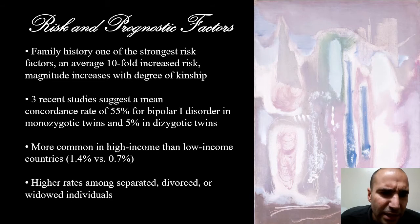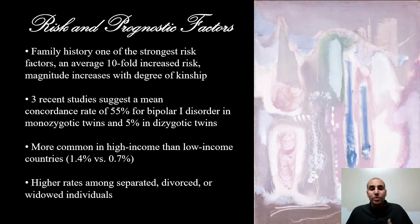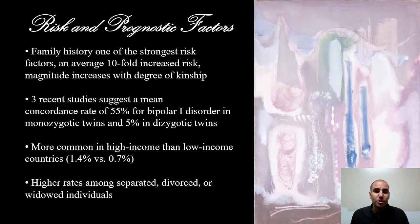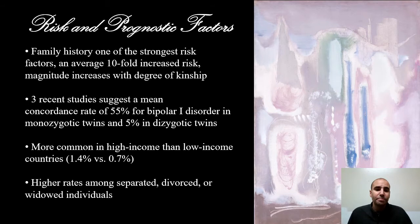There is clearly a genetic component, and risk increases with degree of kinship. A family member with either Bipolar 1 or Bipolar 2 results in a tenfold increase in risk for the individual in question. The concordance rate for identical twins is 55 percent — if your identical twin has Bipolar 1, you are 55 percent of the time likely to also be diagnosed. It drops to 5 percent in dizygotic (fraternal) twins.